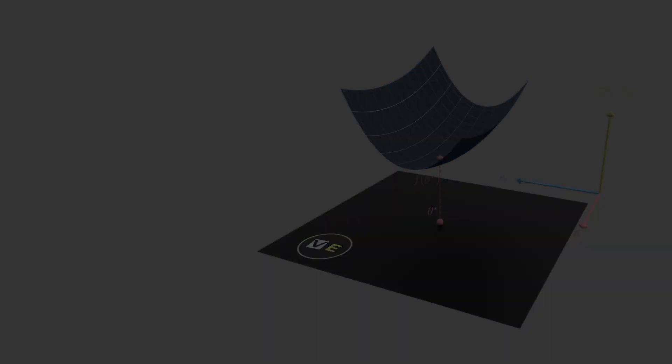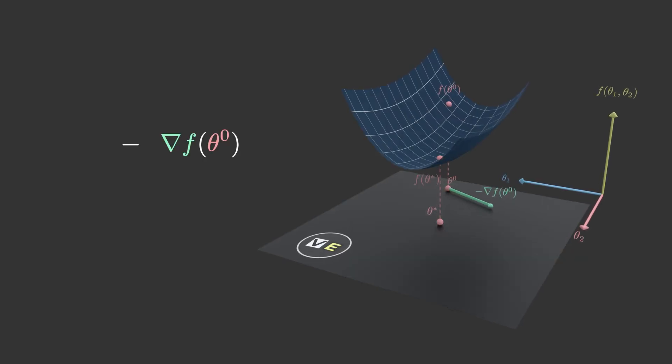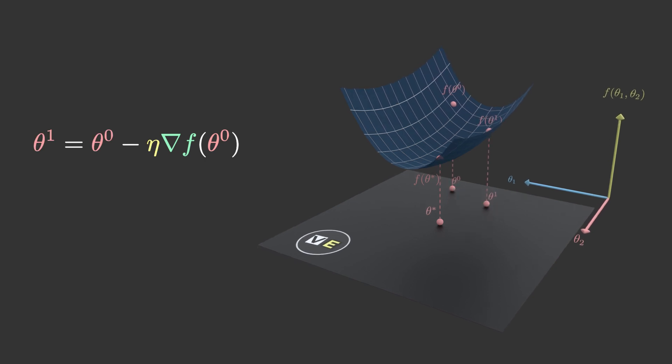So what can we do? The insight of gradient descent is that while we cannot get a look at the whole function all at once, we can easily evaluate the cost function at an arbitrary point. And with a process called backpropagation, we can also evaluate the negative gradient of this cost function and take a small step in that direction.